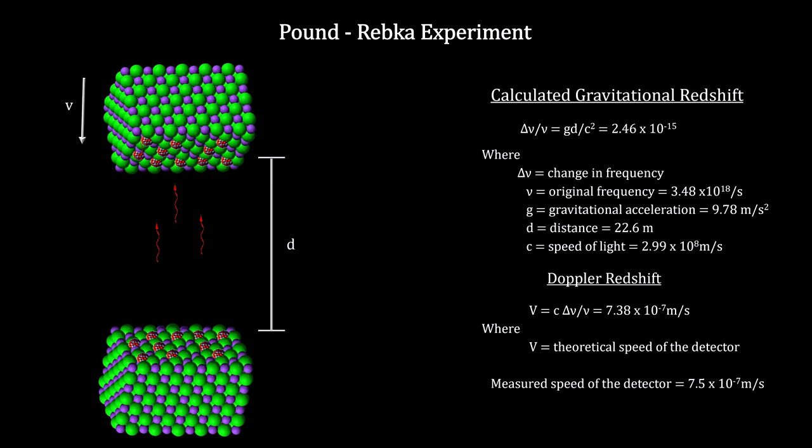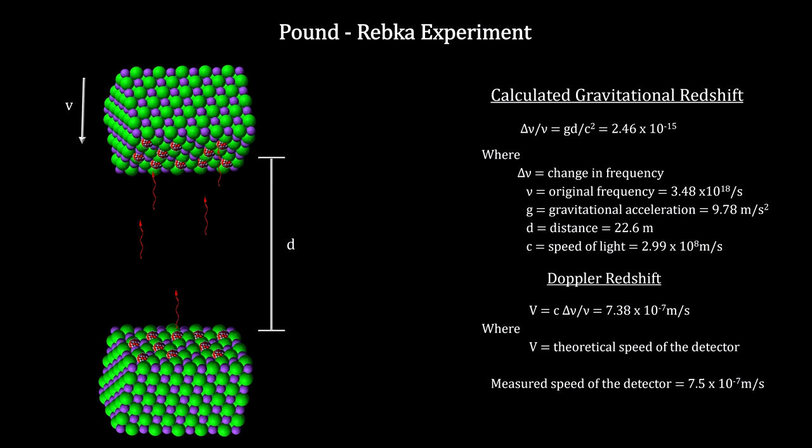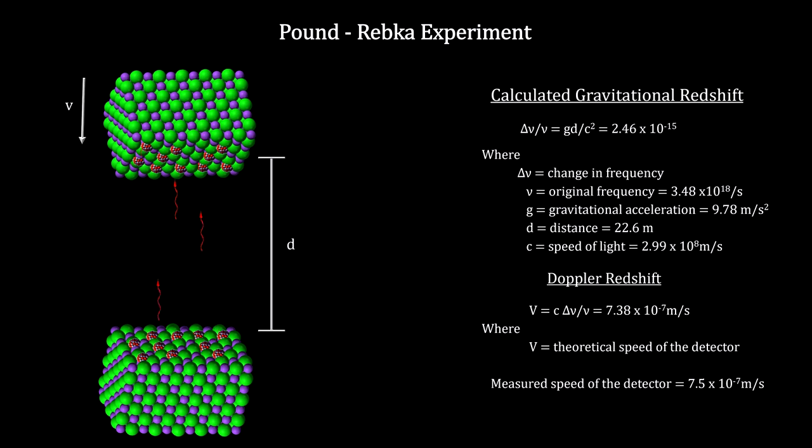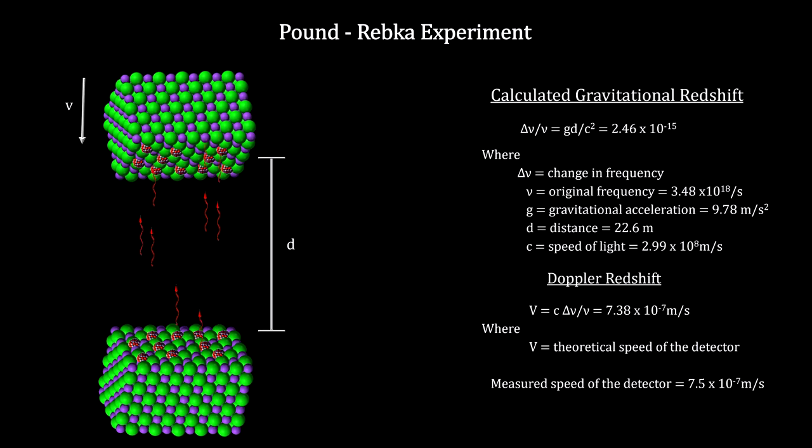We get the amount the frequency changed using the well-understood relativistic Doppler redshift equation, just like the Doppler shift in starlight. These results came in within 1.6% of the value predicted by Einstein's field equations using Schwarzschild's metric.